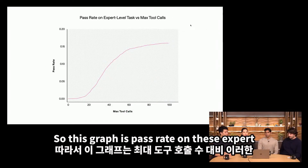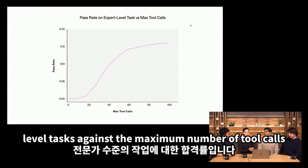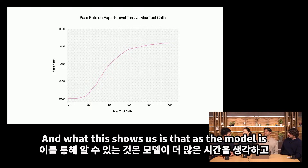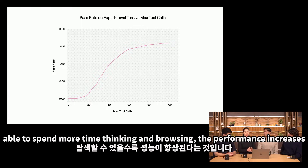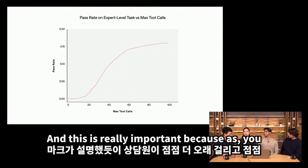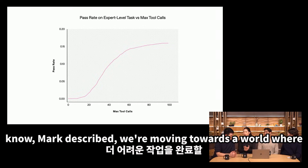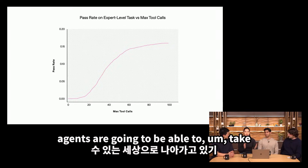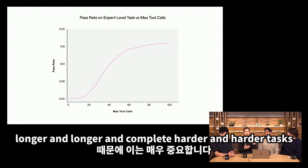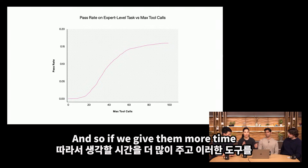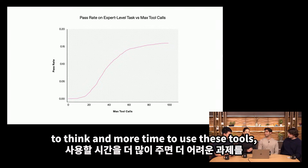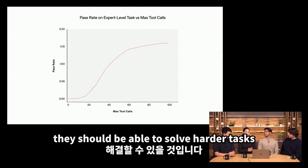This graph shows pass rate on expert-level tasks against the maximum number of tool calls. As the model is able to spend more time thinking and browsing, performance increases. This is really important because we're moving towards a world where agents will be able to take longer and longer and complete harder and harder tasks. If we give them more time to think and more time to use these tools, they should be able to solve harder tasks.